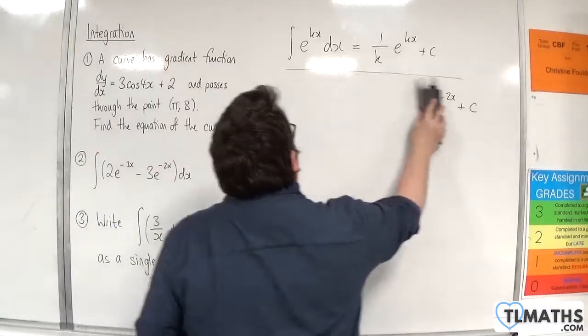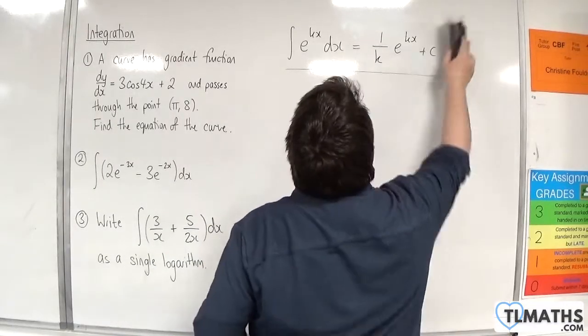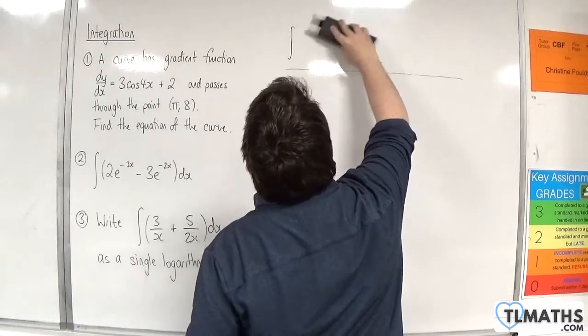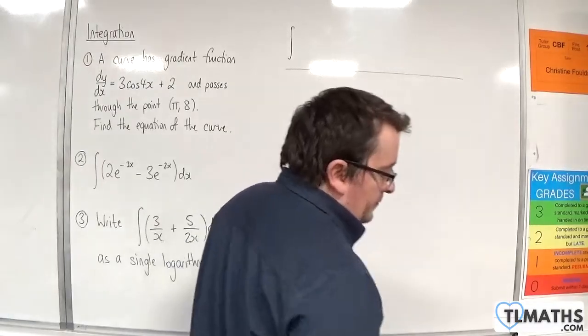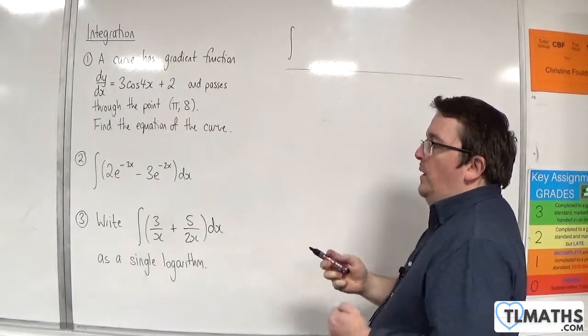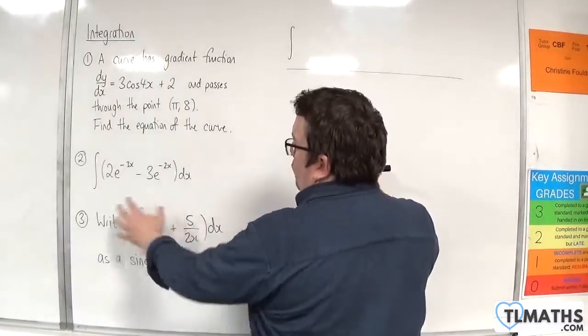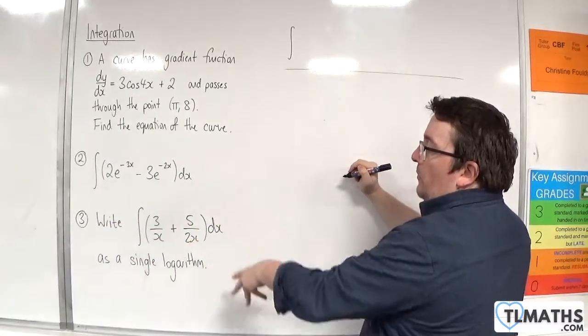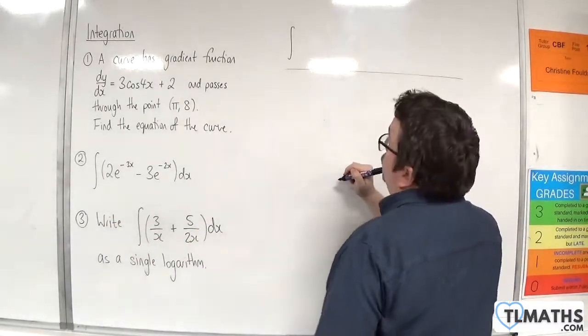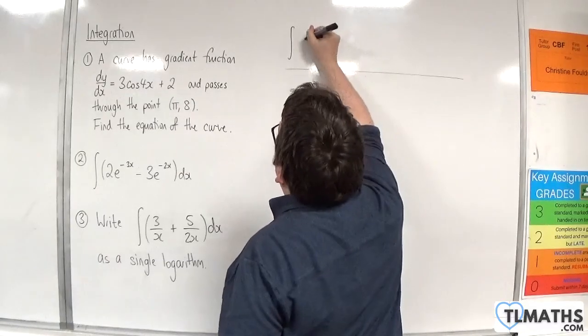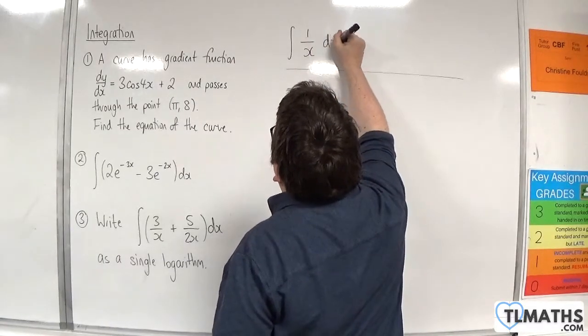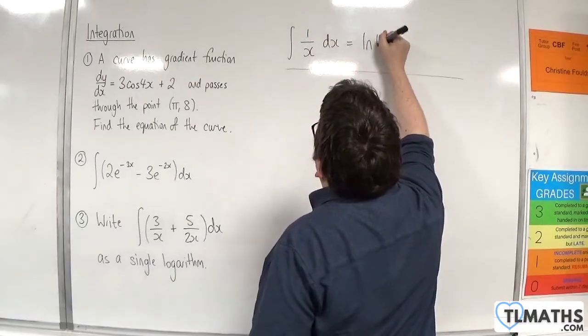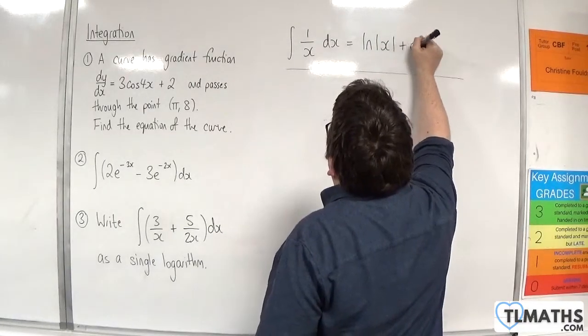And our last one. For our last one, we need to recall - we've got write the integral of 3 over x plus 5 over 2x as a single logarithm. We need to recall that the integral of 1 over x dx is equal to the natural log of mod x plus c.